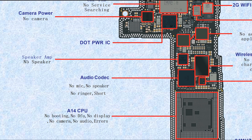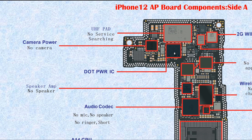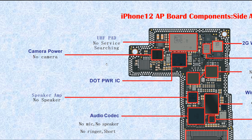This one is the speaker amplifier — if broken, it causes no speaker. This one is the dot power IC — the power IC for the dot projector. If broken, it causes no Face ID. This one is camera power — if broken, it causes no camera, no photo. This one is the UHF PAD — ultra high frequency power amplifier. If broken, it causes no service or searching.